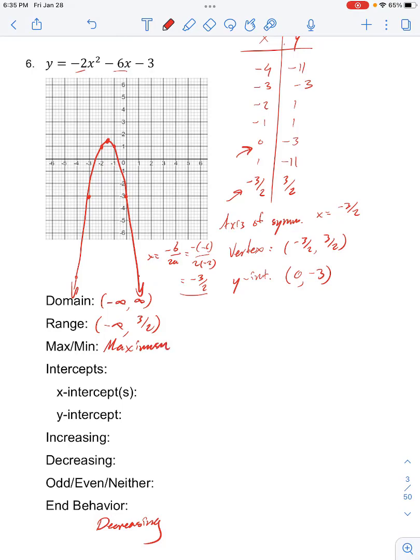Our x-intercepts, so that's when y equals 0, we need to solve for, so that's 0 equals negative 2x squared minus 6x minus 3. Just from the graph, these aren't going to be nice numbers, so we probably need to use the quadratic formula for this. So what we're going to do is negative 6